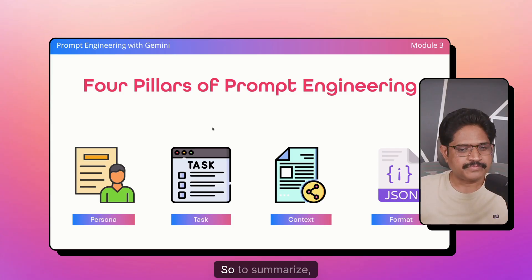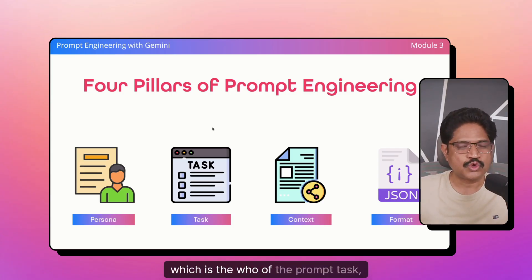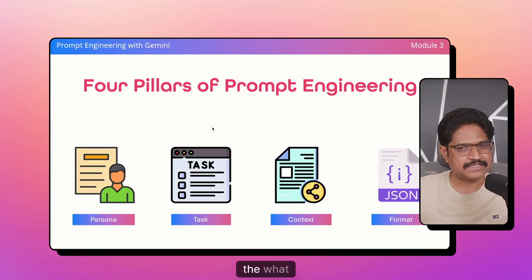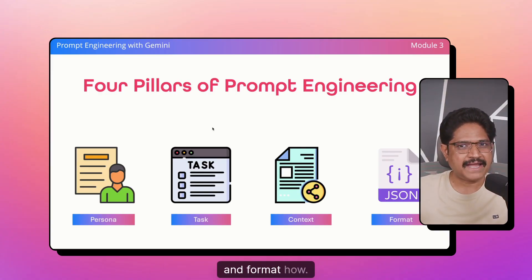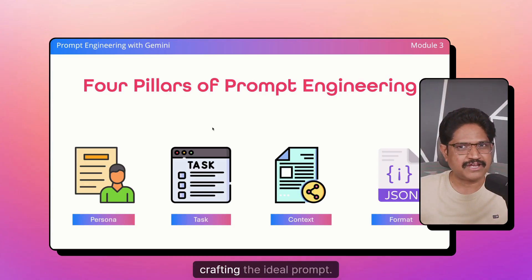To summarize, these are the four pillars: Persona — the who of the prompt. Task — the what. Context — the why. And format — the how. You need to remember this when you are crafting the ideal prompt. Now let's take a look at the demo which will highlight this.